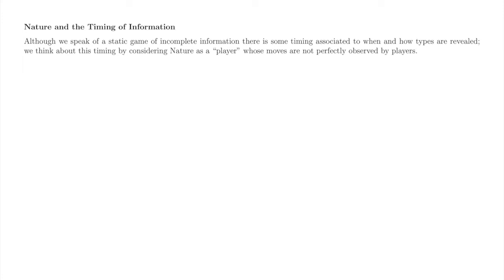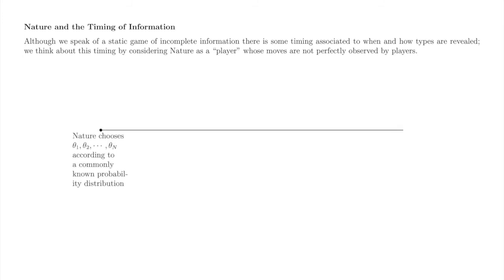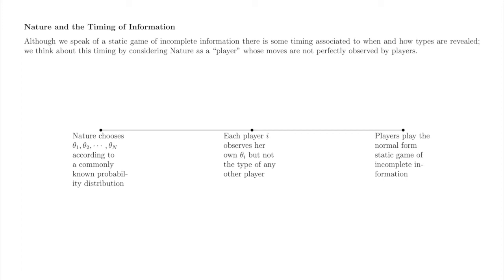We can think of types via a small dynamic precursor to a static game of incomplete information. Although we are dealing in static games, game theorists conceive of nature moving first in a dynamic game and drawing each player's type from a probability distribution specified in the game. The information is incomplete in the sense that nature's move is incompletely observed. Each player observes nature's selection of her own type, but does not observe the types nature selects for other players. Rather, each player believes that other players' types are distributed according to nature's draw. After nature draws all types and each player observes her own type, the static game proceeds as described in the normal form. The normal form will seldom, if ever, make mention of this dynamic precursor. The expectation is that you apply it to the beginning of the game yourself.